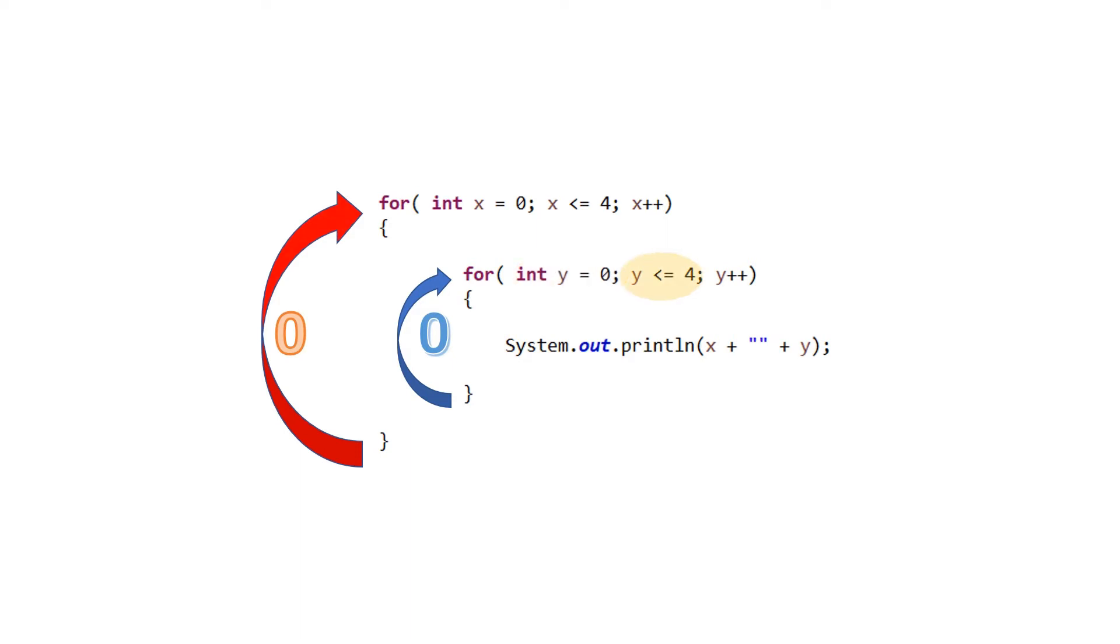Continuing to the constraint of the inner for loop, we again see that this loop will continue to repeat so long as the value of y remains less than or equal to 4. The last component of the inner for statement is the iterator, which tells us that y will increase by 1 each time the inner loop is repeated. Now we enter into the body of the inner or nested loop.